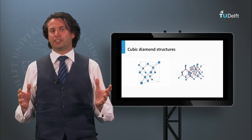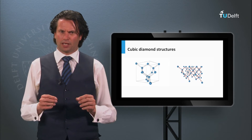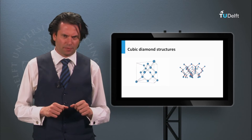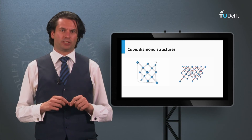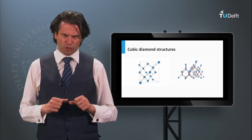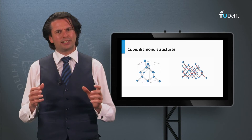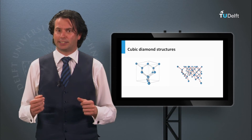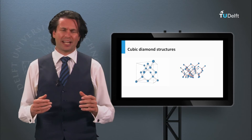The lattice structure of semiconductor materials is crystalline. Let's look at some properties of the crystalline lattice. In week 2 we already introduced its lattice properties. Crystalline silicon has a cubic diamond structure. A crystalline lattice means that atoms are arranged in a certain pattern which repeats itself. A crystalline lattice has long range order and symmetry.